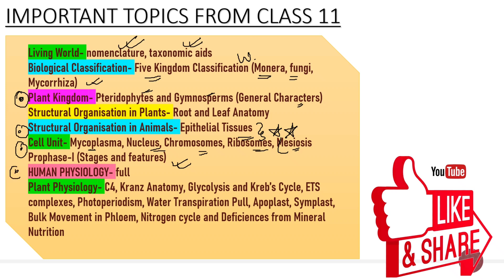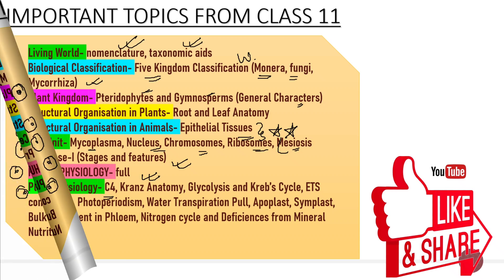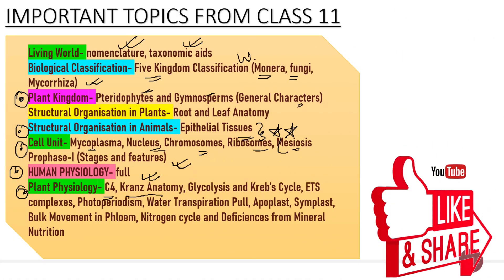Next is your Human Physiology — in this unit you have to study it in full. And next is your Plant Physiology. In Plant Physiology, do read about the C4 plants, Kranz anatomy, glycolysis, Krebs cycle, and ETS complexes. Each and everything, including all the enzymes and substrates, should be at your fingertips.